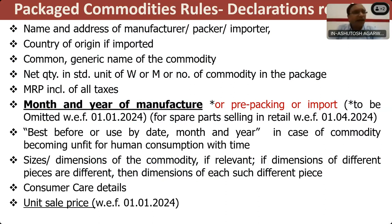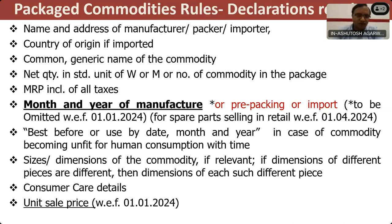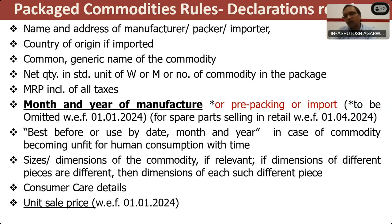The declarations required on prepackaged commodities: name and address of the manufacturer, packer, and importer — so the consumer knows who has manufactured the product, which is their right to know. Country of origin — very important if I don't want to buy a product from a particular country. Common or generic name of the commodity. Net quantity in standard unit of weight, measure, or number. MRP inclusive of all taxes. Month and year of manufacture. Best before or use-by date in case of commodity becoming unfit for human consumption. Size or dimensions if relevant. Consumer care details including consumer care number and email ID.